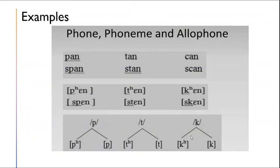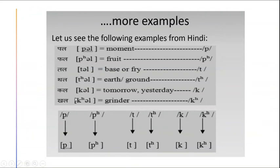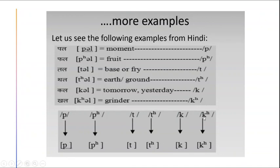Now let's look at an example from the Hindi language. If we change the aspiration, it changes the meaning of the word. For example, 'pull' means 'moment' and 'pull' (aspirated) means 'fruit'. So here, aspiration changes the meaning entirely — it shows that 'p' and aspirated 'p' are totally different phonemes in Hindi. Unlike English, in Hindi 'p' and 'p' are not allophones of the same phoneme — 'p' is one phoneme and aspirated 'p' is a separate phoneme. The same goes for 't' and 't', and 'k' and 'k'.